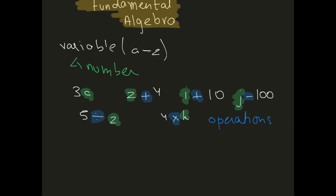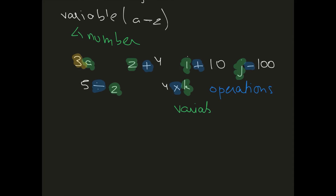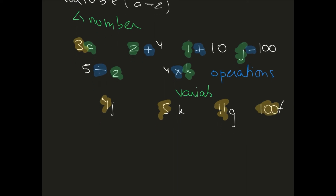We also have coefficients. A coefficient is any number right next to a variable. So in 3a, this 3 is a coefficient. Other examples: 4j, 5k, 11g, 100f — the numbers 4, 5, 11, and 100 are all coefficients because they are right next to the variable.